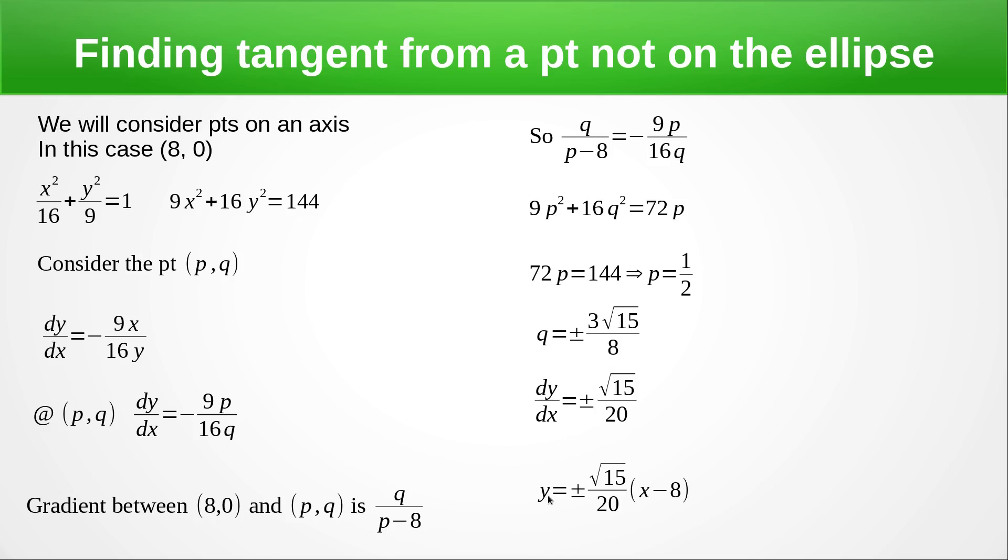So it's y - 0. Well, that's OK. That's nice. Just y = ±√15/20 (x - 8).